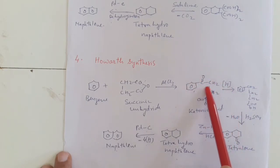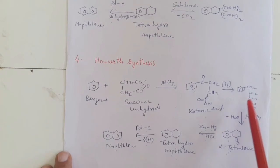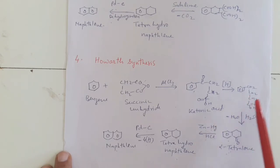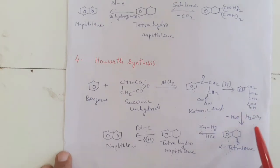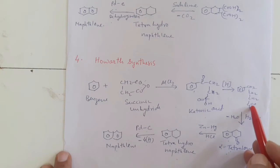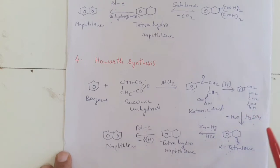The CO group is reduced to the CH2 group and we get the carboxylic compound — 4-phenyl butanoic acid. When reacted with sulphuric acid, it eliminates a water molecule: hydrogen from the benzene ring and OH of the carboxylic group. We get the cyclic compound tetralone.